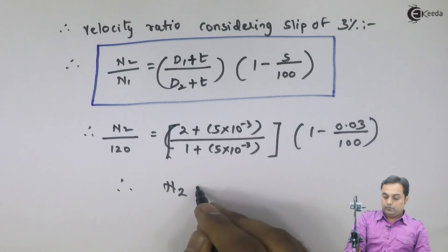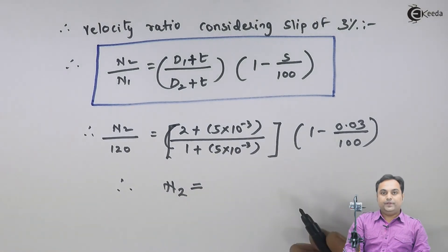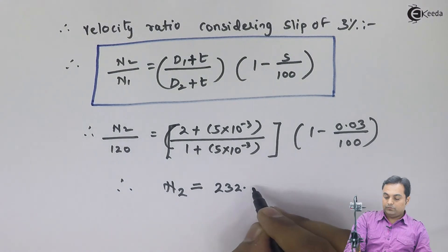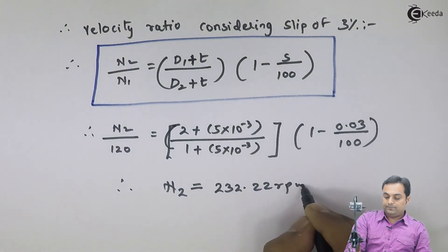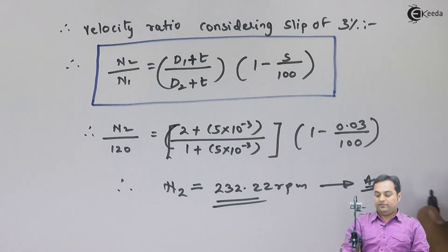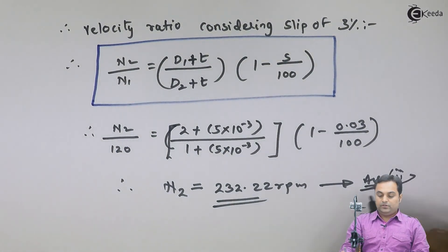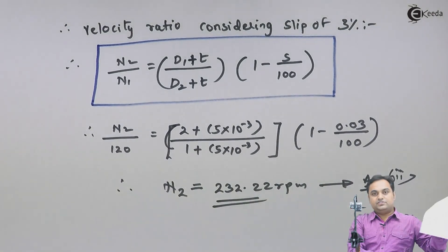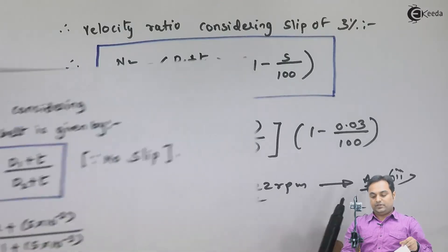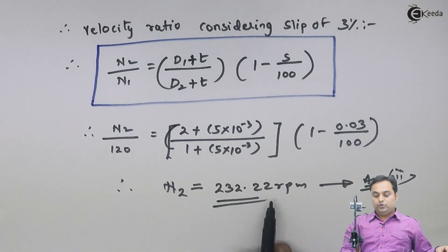So finally I would be getting the answer of n2 which comes out to be 232.22 rpm - that's the second answer. It means when we are considering slip, the speed of the driven shaft reduces. First it was 239 rpm, now it has become 232.22 rpm. So because of slip, the speed of the driven shaft decreases, and with this we complete the question.